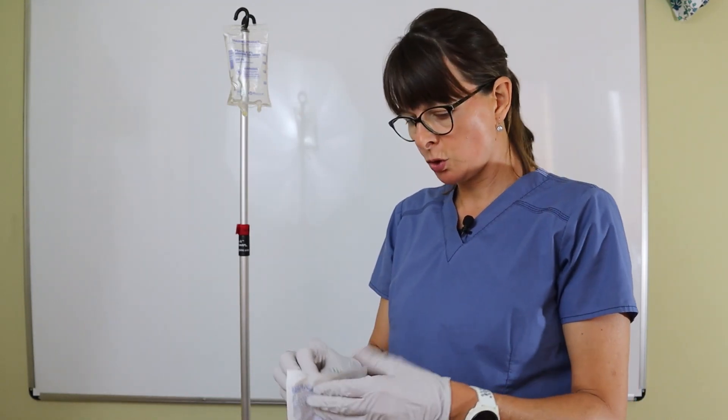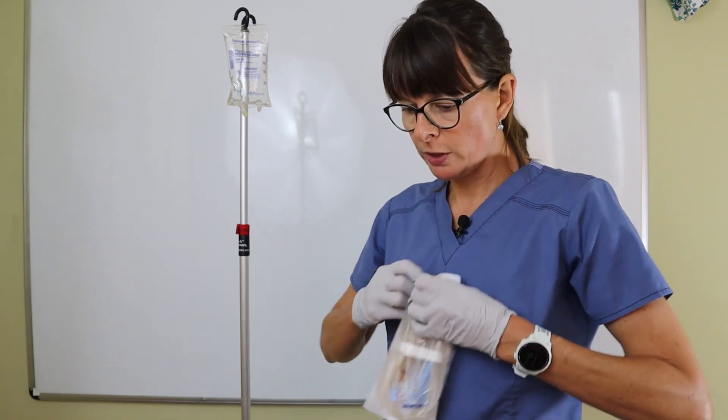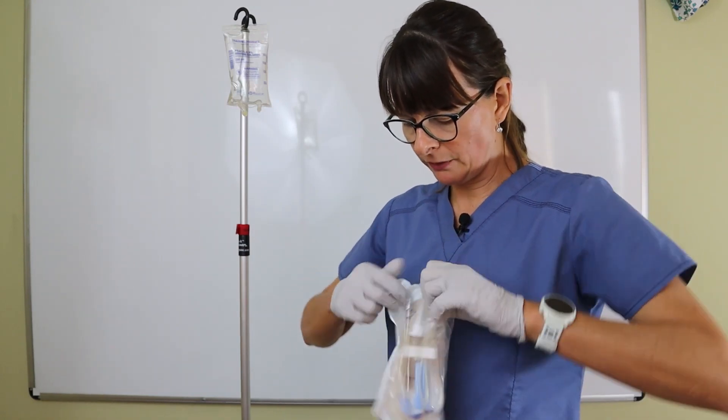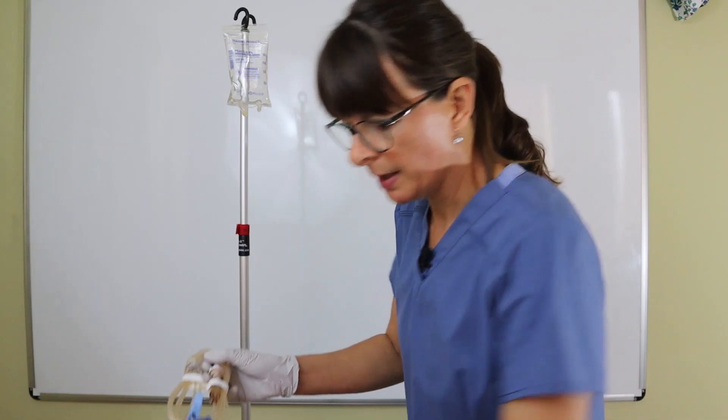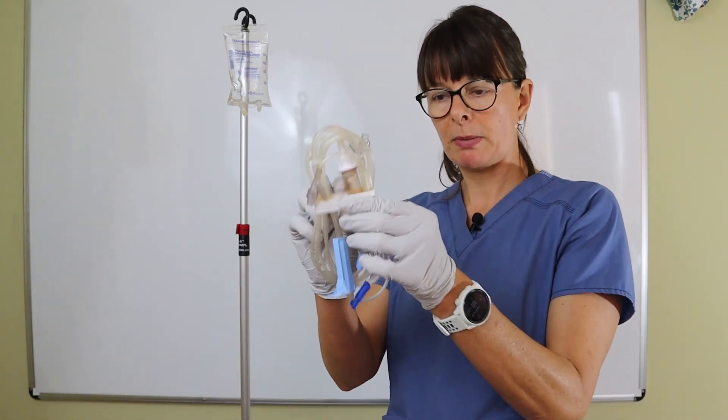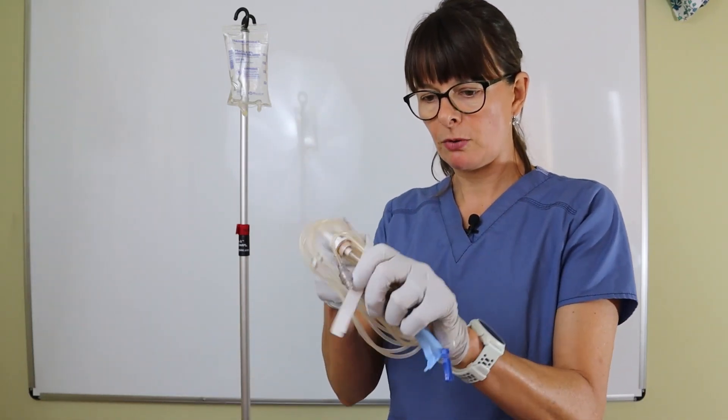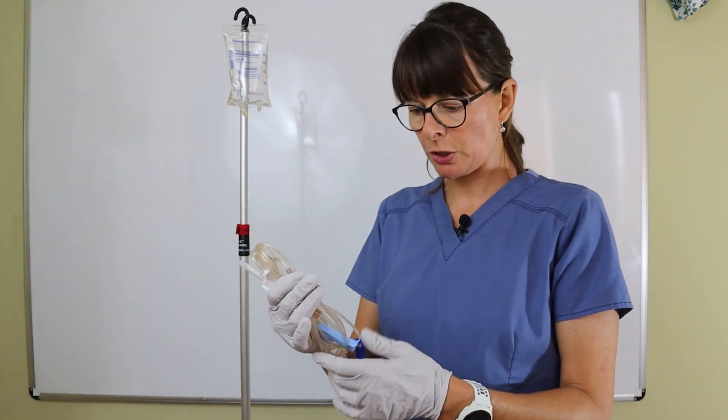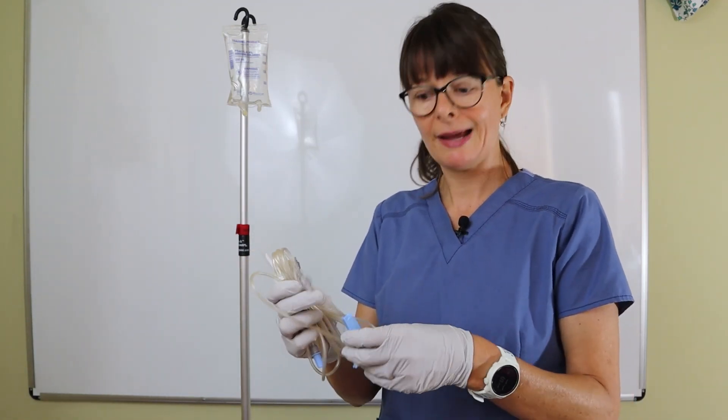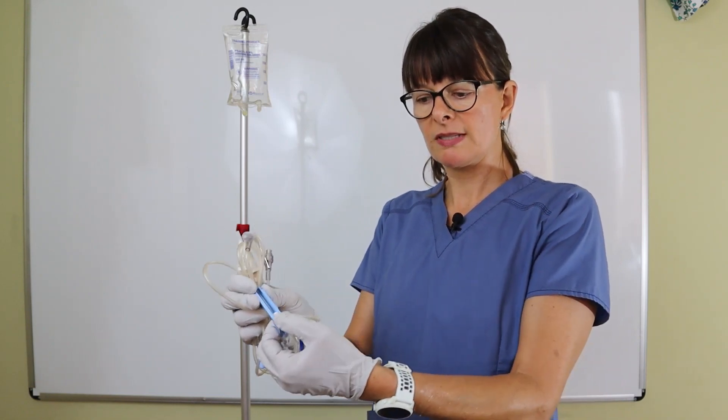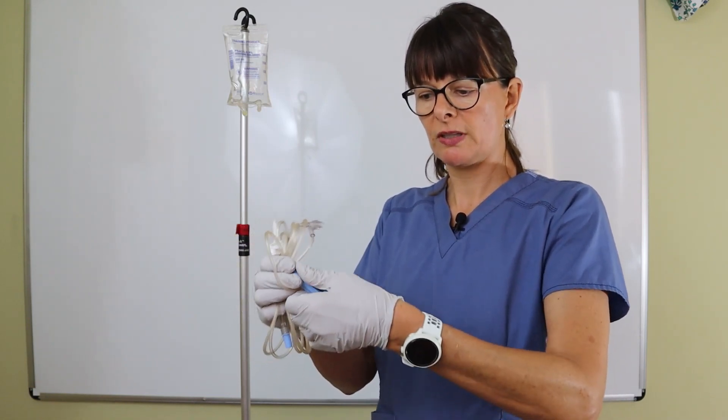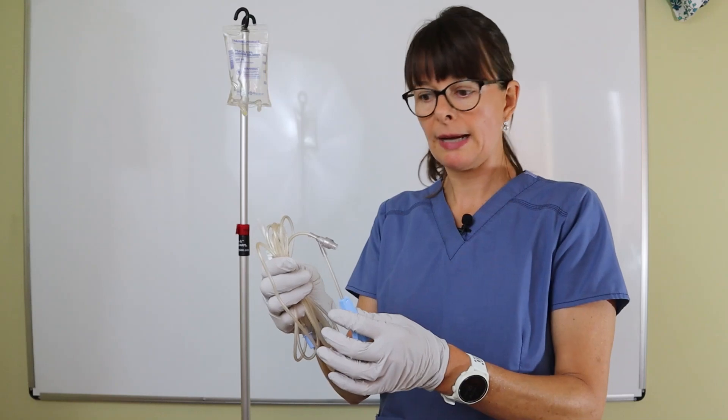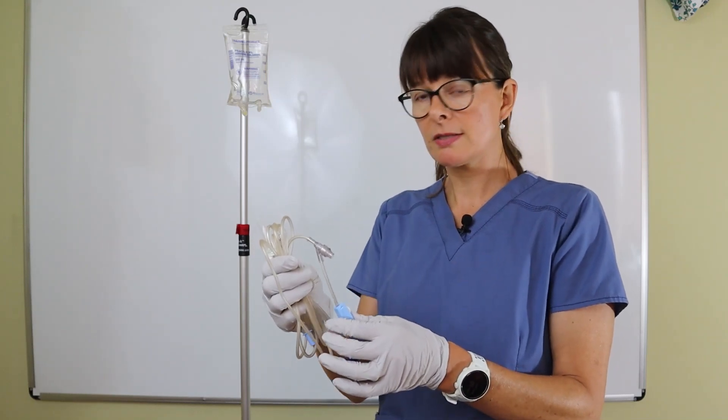I take my IV tubing out of the wrapper—it's usually nicely set up like this. I take off any paper wrap that holds it together. A very important first step is to close the clamp right here. You can see it's kind of loose; if I switch it the other way, it closes the clamp.